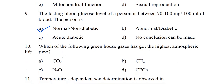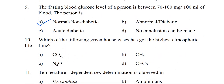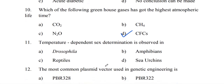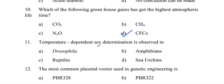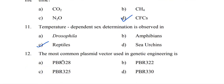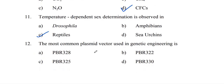Which of the following greenhouse gases has the highest atmospheric lifetime? It will be CFC. Temperature-dependent sex determination is observed in reptiles. The most common plasmid vector used in genetic engineering is pBR322 — option B.